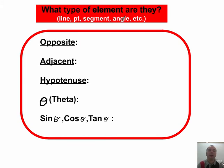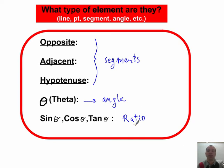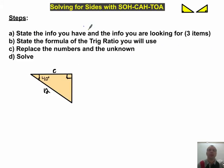But what type of element are they? Are they line, point, segment, angle, etc. So the opposite, the adjacent and the hypotenuse, they are all sides or segments. Right? Theta is actually an angle. But what is sine theta, or cos theta, or tan of theta? That is actually a ratio. So it doesn't have any units. It's just a side divided by another side. It's just a number. And that number could be bigger than one, or it could be very large for tangent, but for sine and cos it can only go up to one. And we'll talk about that later.